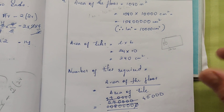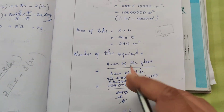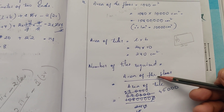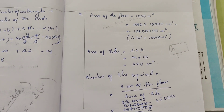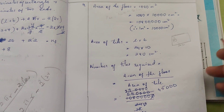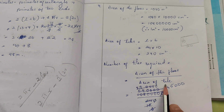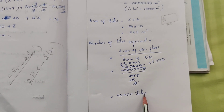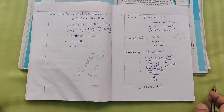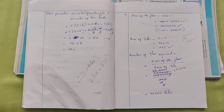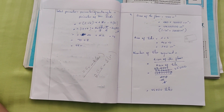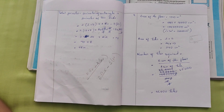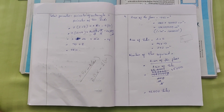Number of tiles required = area of the floor ÷ area of one tile = 10,800,000 ÷ 240 = 45,000 tiles. That's enough for today. I'm going to give you some exercises to do. Don't forget to write your name, row number, class, and section, and don't forget to submit.